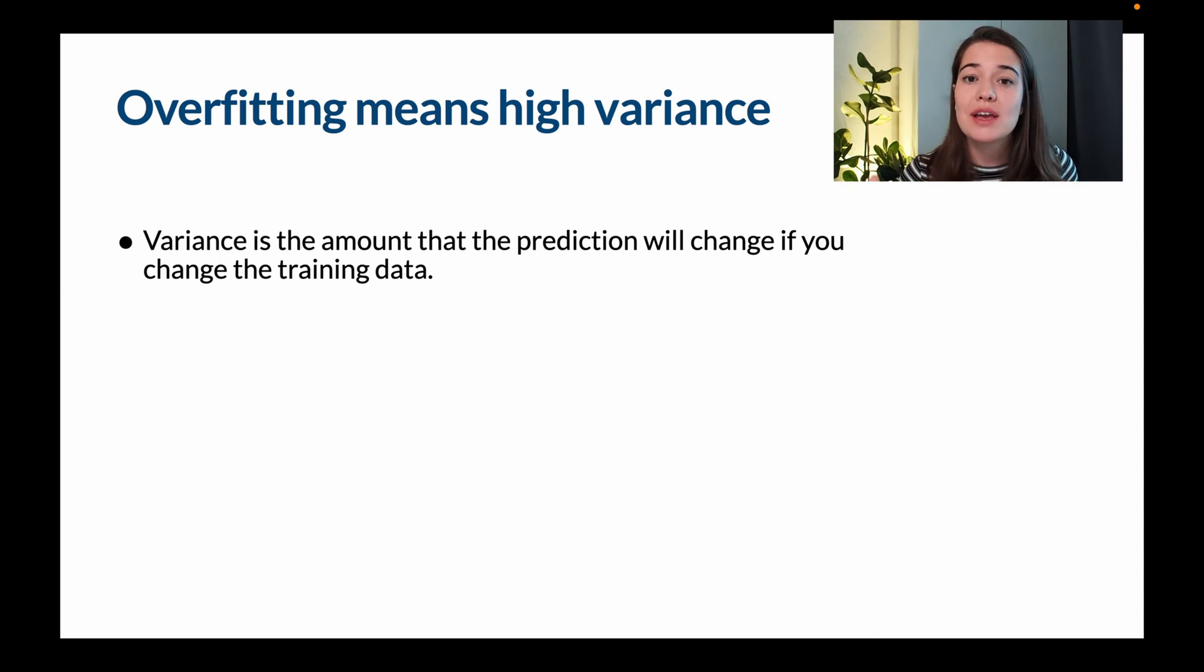Because if it's more sensitive, it means that it is overfitting. But what causes this high variance? Well, one thing that causes high variance is the flexibility of the models. Because the more parameters that you have in your model, the more flexibility, the more things that you can tweak in your model, it is more likely that you will have high variance.